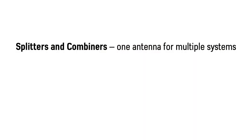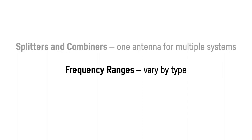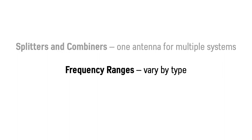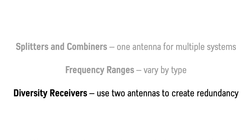First, we look at splitters and combiners, which let us use one antenna or one set of antennas for multiple wireless systems. Then we look at the frequency ranges of antennas, which vary by type. And finally, we talk about diversity receivers, which use two antennas to create redundancy.